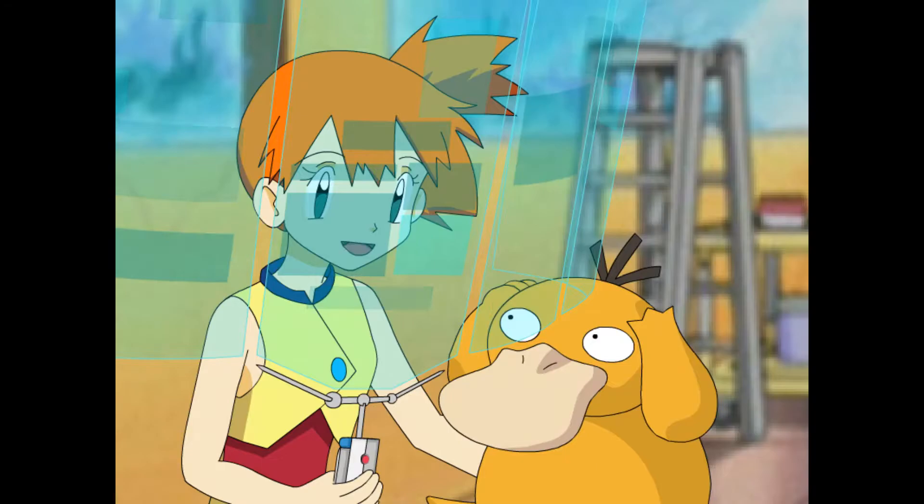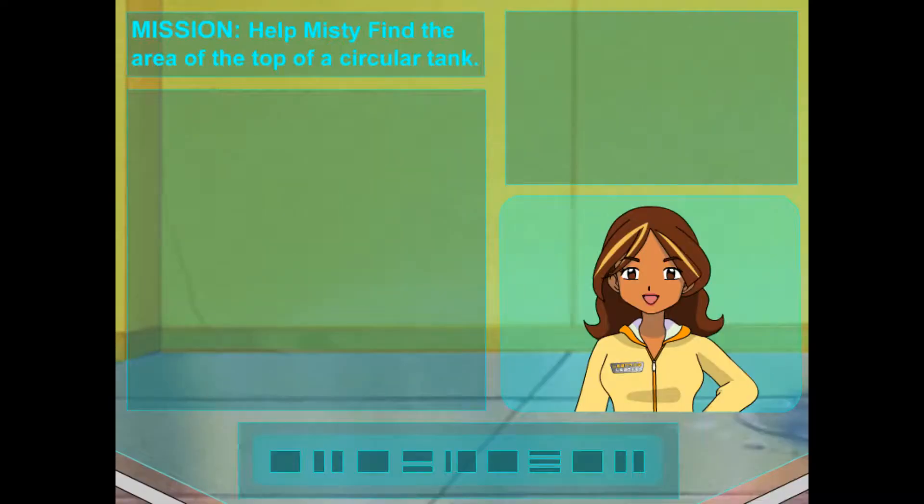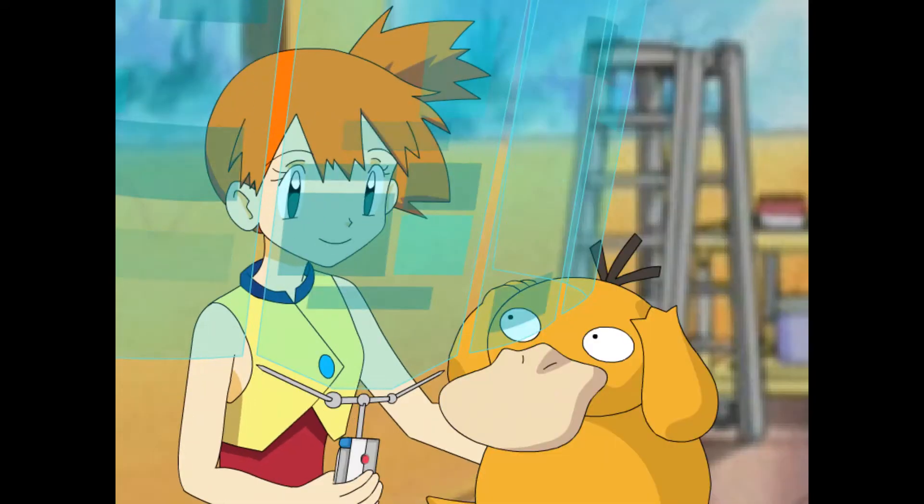We've been making covers for some of the Pokemon tanks. They keep Psyduck from falling in the tanks. Psyduck. Well, that sounds like a good idea. So what's the problem? To make the covers, I need to know the area of the top of the tank. I know how to find the area for a rectangle, but we have a lot of circular tanks. How do I find the area for the tops of those tanks?